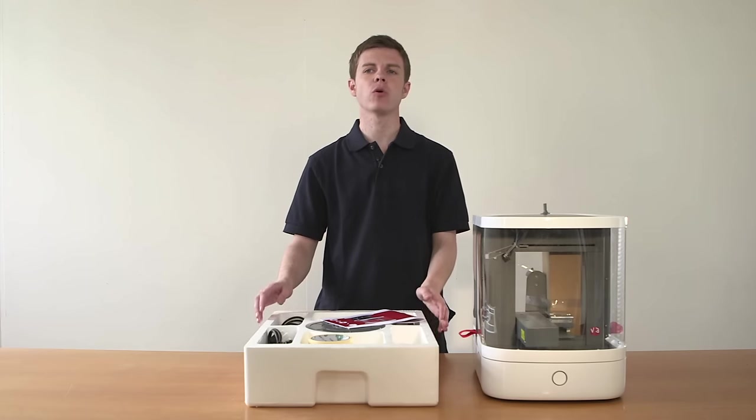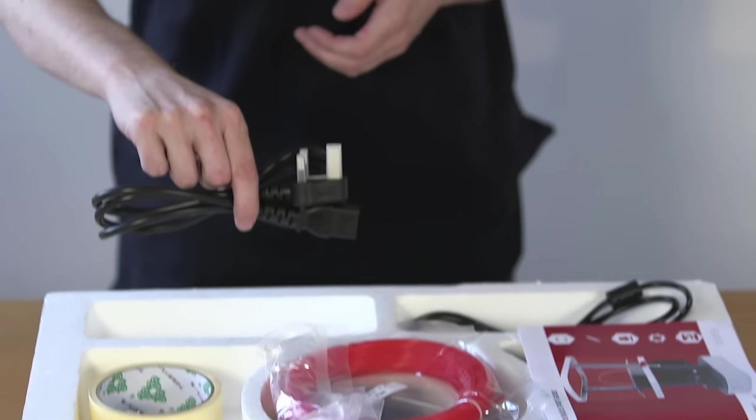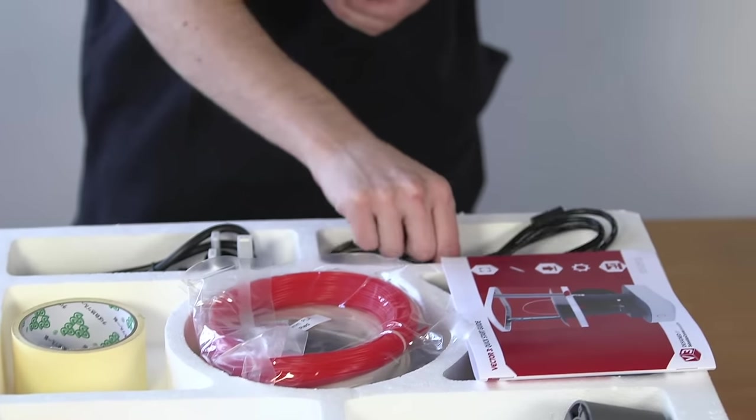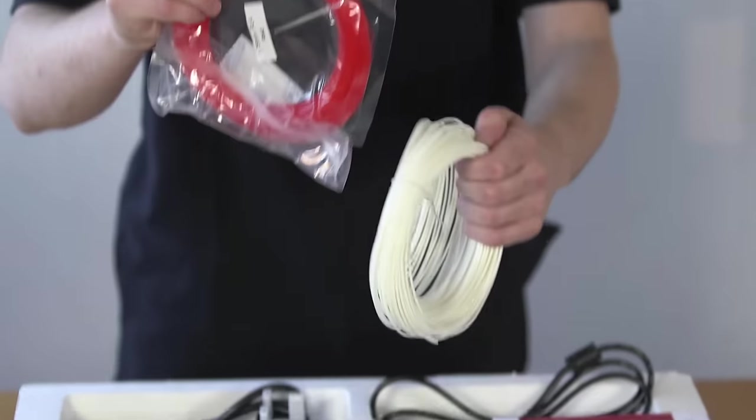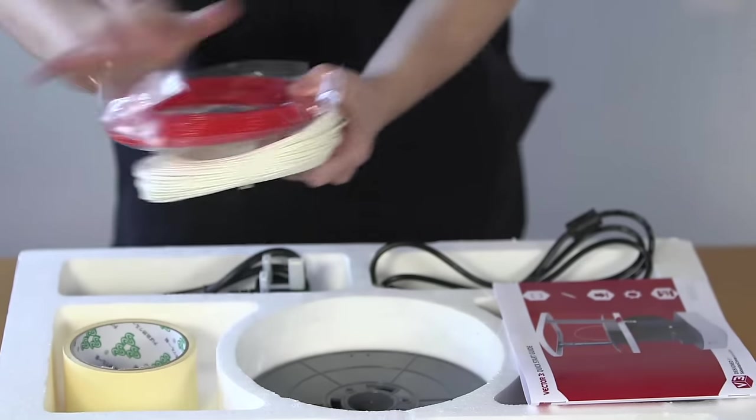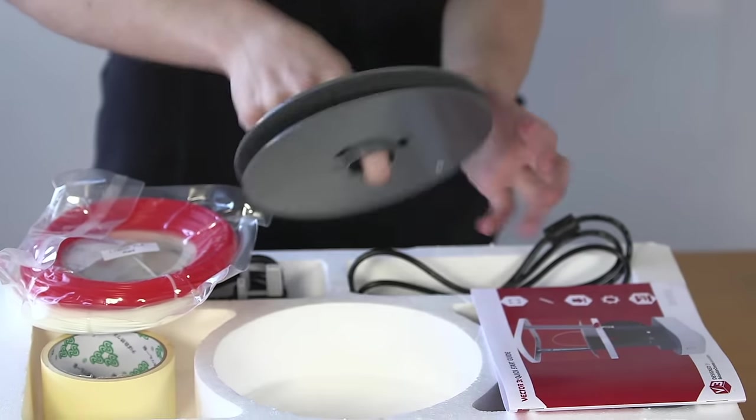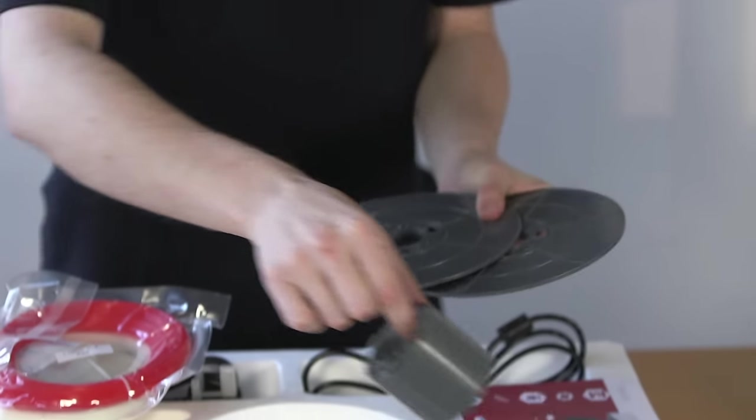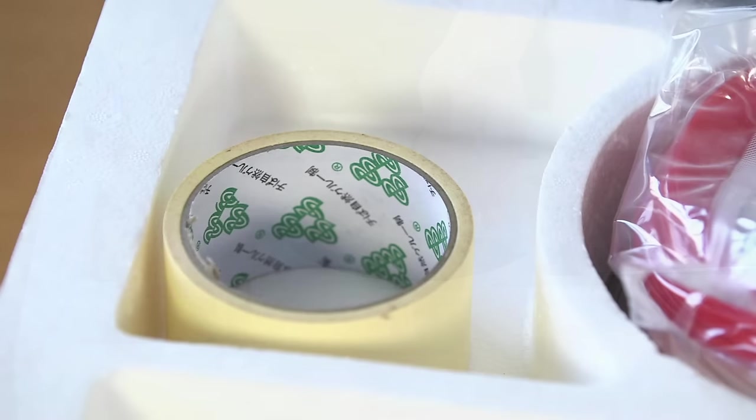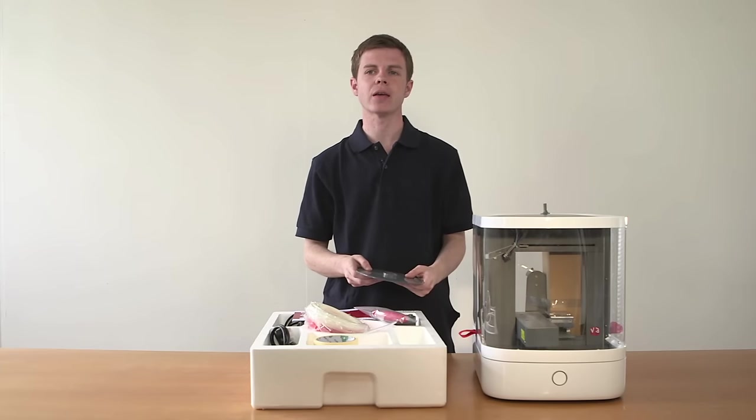Before assembly, check that you have all the items shown here. Power supply, USB cable, two rolls of PLA filament. Filament spool which comes in three parts, plus screws, a roll of masking tape. Also, to recap on the tools, the two allen keys, calibration gauge and scraper tool.